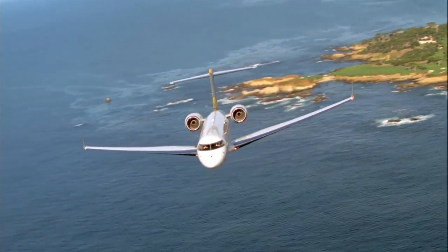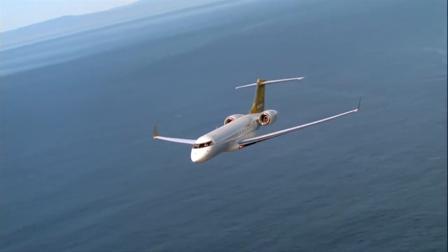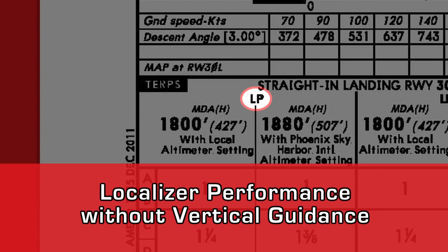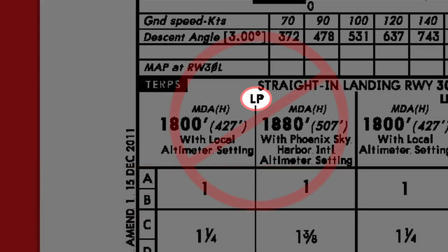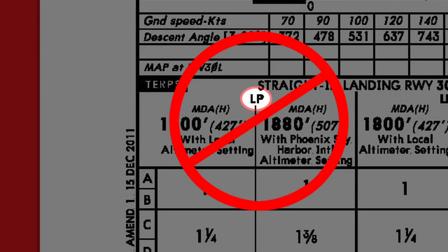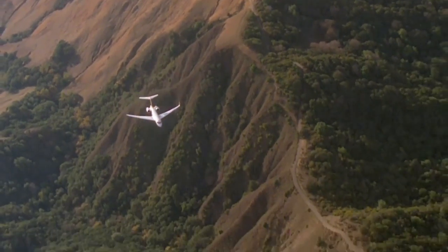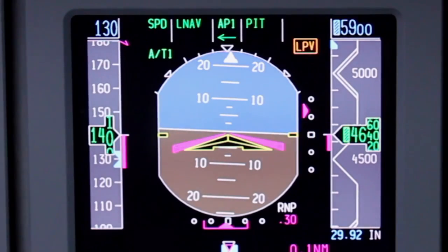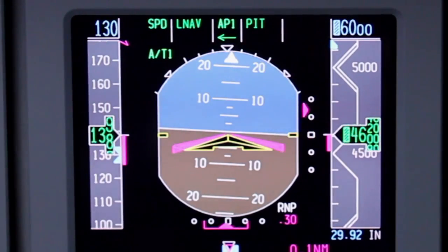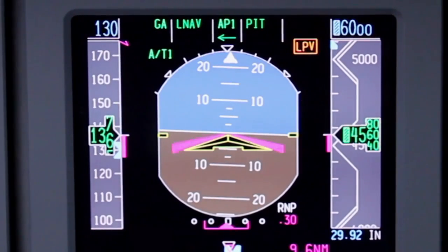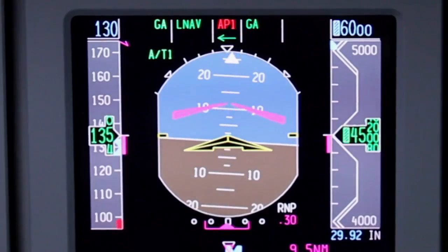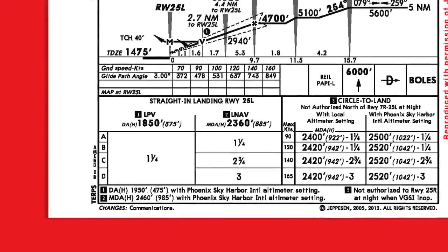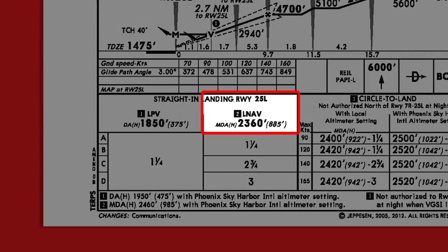When conducting SBAS operations, there are a few important things to remember. LP minimums on RNAV approaches stands for localizer performance without vertical guidance. Currently, operators of Honeywell platforms are not authorized to perform approaches to LP minimums. Pilots must be familiar with the fail-down capabilities of their SBAS system. An amber LPV enunciator is displayed on the PFD up to 30 nautical miles from the landing threshold when conditions exist that would prohibit descending to LPV minimums. If an amber LPV enunciator is displayed, the flight crew may have the ability to continue the approach to LNAV-only or LNAV-VNAV minimums.